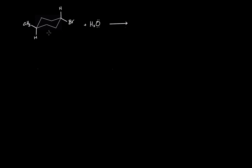Let's discuss another example of cyclohexane where we have water as the nucleophile. Water is a neutral, weak nucleophile. Looking at the alkyl halide, we can see that this is a secondary alkyl halide. A secondary alkyl halide with a weak nucleophile means the reaction will undergo an SN1 mechanism.